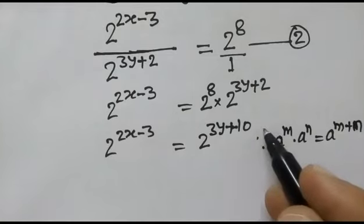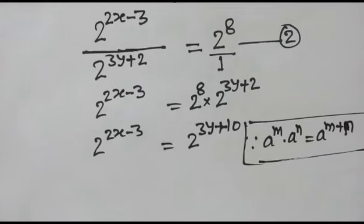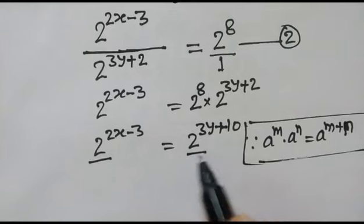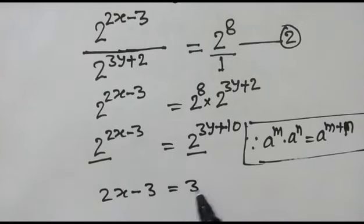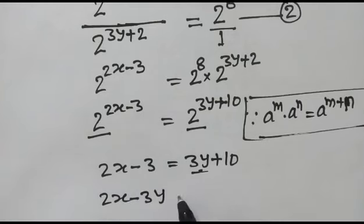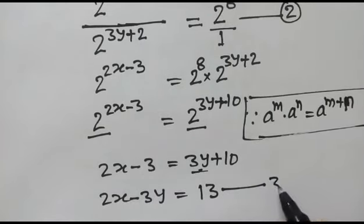Here the base is the same on both sides — 2 and 2 — so the powers will be equal. Therefore, 2x minus 3 equals 3y plus 10, which gives us 2x minus 3y equals 13. We will call this equation number three.